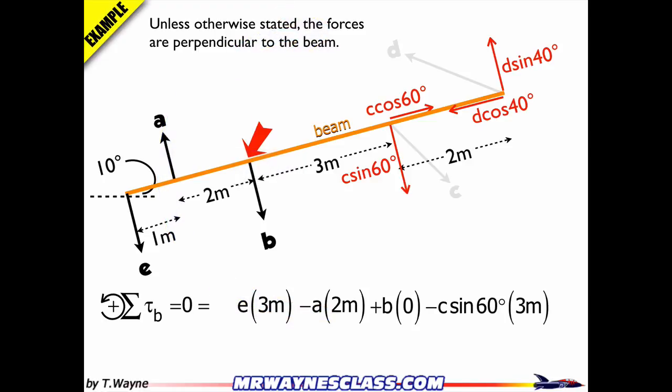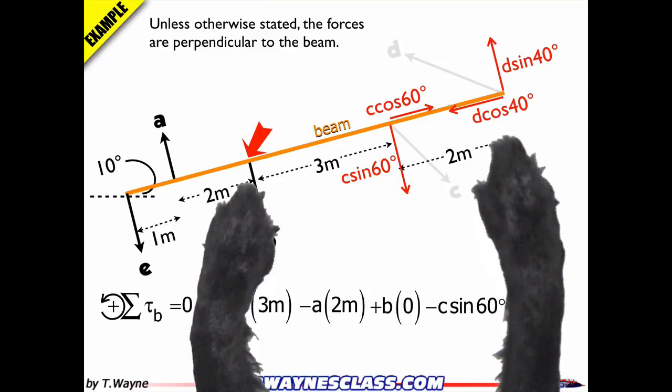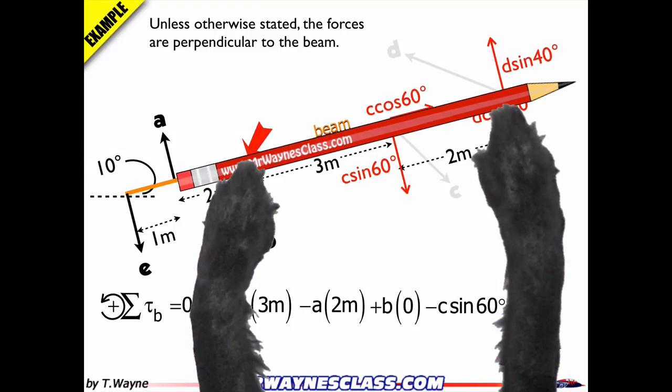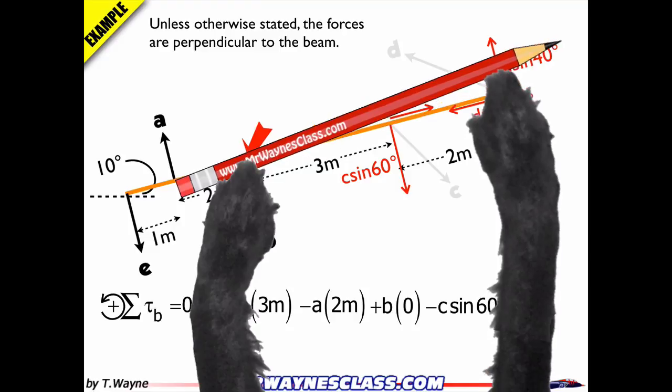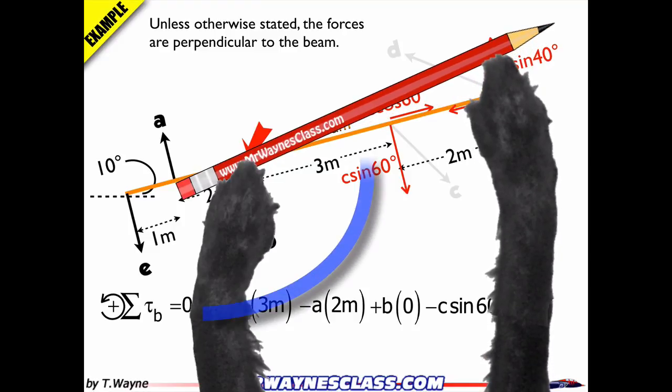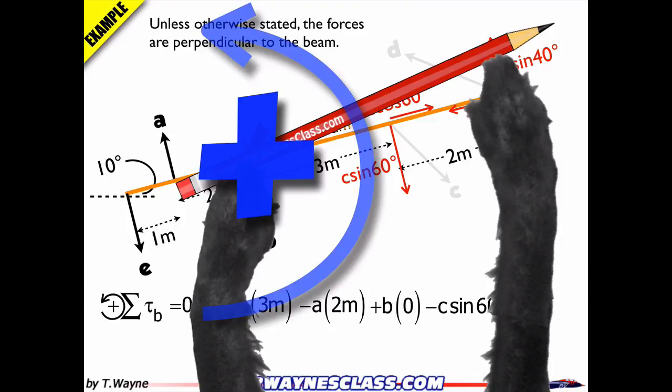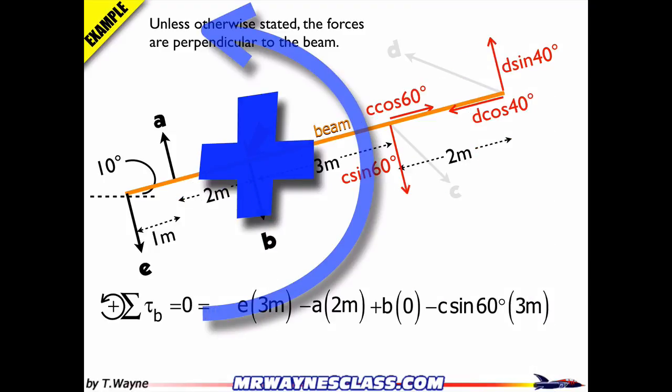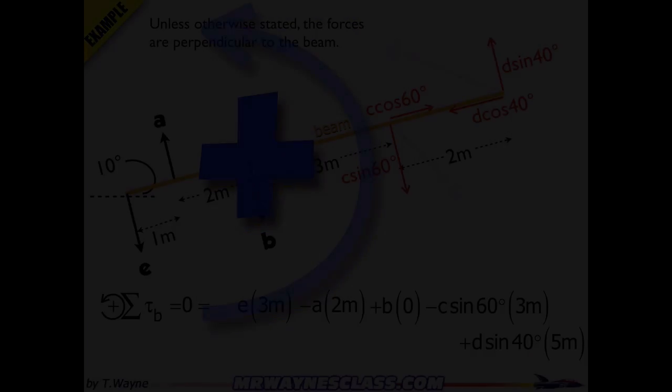And the final one for D, I'll put D up, put the pencil test, I'll have her push in the direction of the force, and I can see the pencil rotates in a positive moment with a positive rotation, so the next torque calculation will be a positive force times distance, so that's going to be a positive D sine 40 times five meters. And that's my expression for summing up the torques.